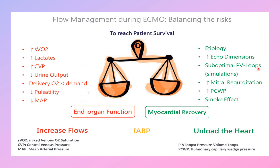When we need to unload the heart to allow more myocardial recovery, that will happen in the case of LV distension, presence of mitral regurgitation, pulmonary capillary wedge pressure elevation, and smoking effect. All of these need to be considered in peripheral VA ECMO and are not present if we use central veno-arterial ECMO.